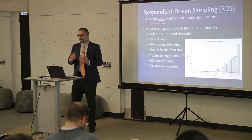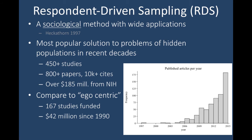What's become the dominant method of approaching this problem of hidden populations is respondent-driven sampling, originally developed by sociologists interested in studying populations of drug users. It's been used hundreds of times since then — there have been more than 450 funded NIH studies employing RDS, resulting in more than 800 papers cited tens of thousands of times. The NIH has devoted over $180 million of funding to RDS research. The first paper was in 1997, and you can just see the growth taking off in numbers of papers published every year using RDS.